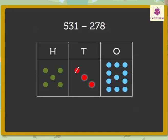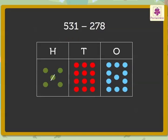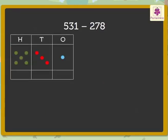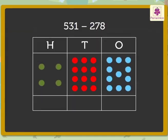Now look, there are two red dots in the tens column and we need to cancel seven red dots. We cannot subtract seven from two, hence we regroup one green dot to ten red dots. As we already know, one green dot is equal to ten red dots.